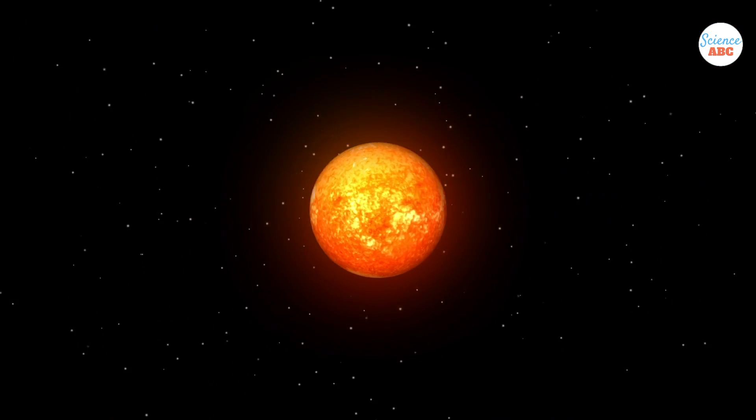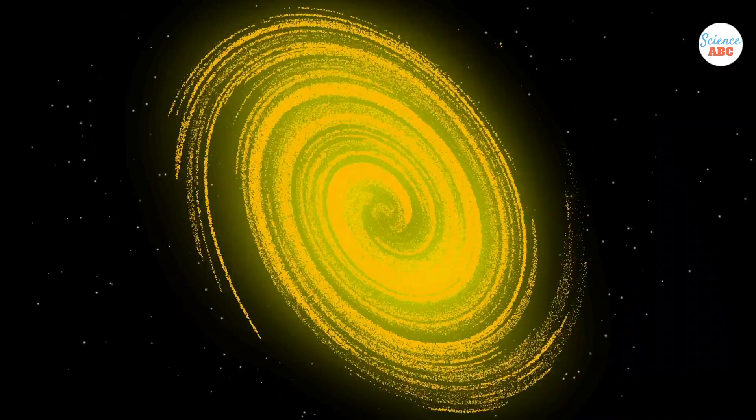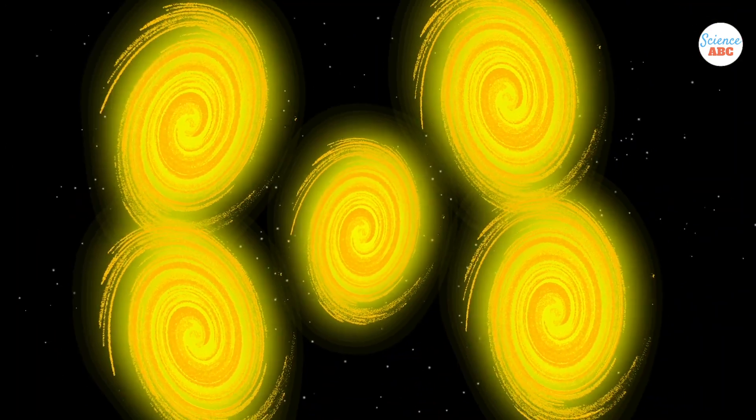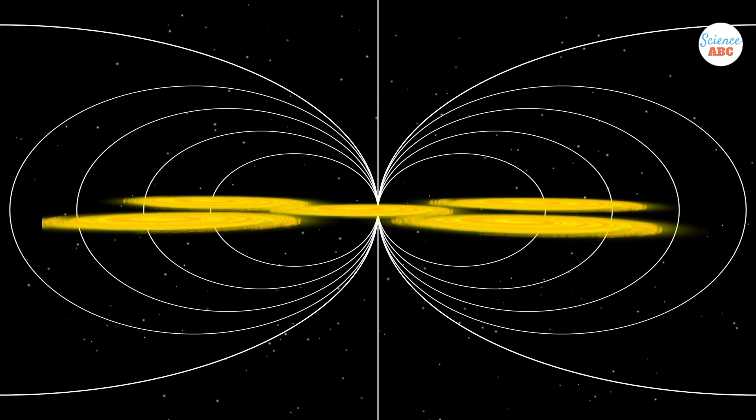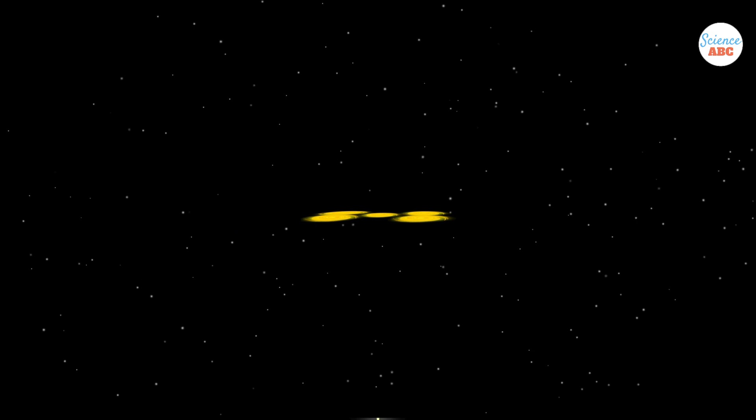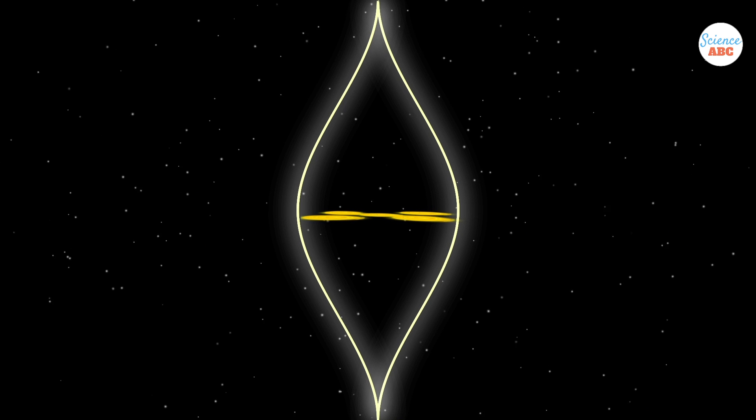Gravitational lensing occurs when a huge amount of matter, like a star, galaxy, or a cluster of galaxies, creates a powerful gravitational field around it, strong enough to bend light coming from distant galaxies behind them.